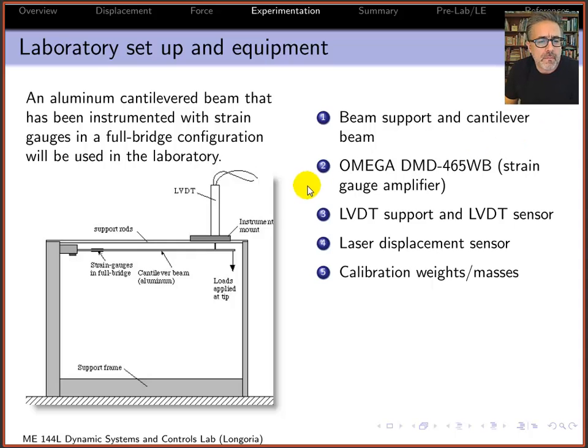I'm showing the laboratory configuration you're going to have. We have a cantilevered beam with a tipped force, and we're going to be measuring the deflection. Usually we measure the deflection at the tip, at the point of force application. There's a strain gauge instrumentation amplifier where we measure the output voltage.